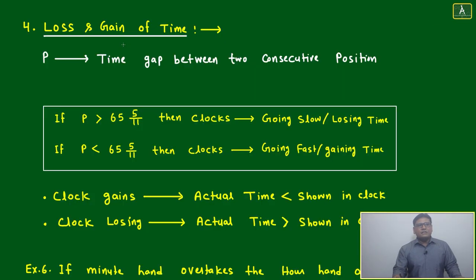This problem is based on loss and gain of time. This concept of p has already been discussed in the intro about clock time gap between two consecutive positions. Also, p is greater than 65 into 5 by 11.